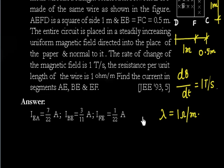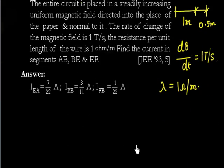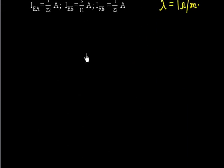We have to calculate the current in segments AE, BE, and EF. To proceed, let me redraw the diagram so that things become easy, because I have to write Kirchhoff's equations.